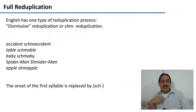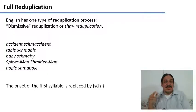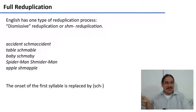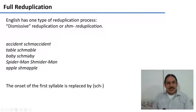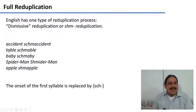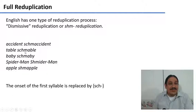English has one type of reduplication called dismissive reduplication. For example: 'accident, schmaccident'; 'table, schmable'; 'baby, schmaby'; 'Spider-Man, schmider-man'; 'apple, schmapple'. The process is that you replace the onset of the first syllable with the morpheme 'schm-'. So you take the onset of the first syllable of 'table', which is the T, and replace it with 'schm-': 'table schmable'.